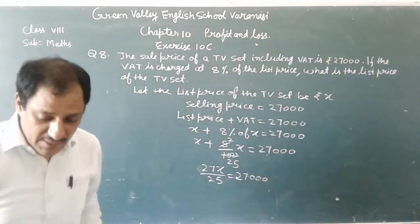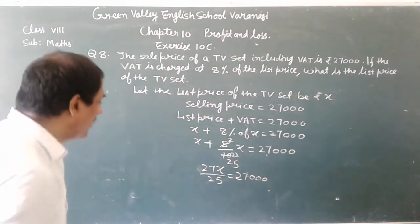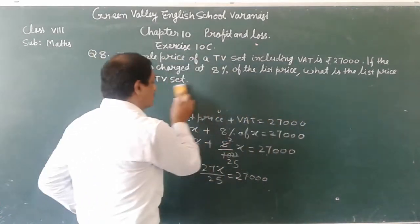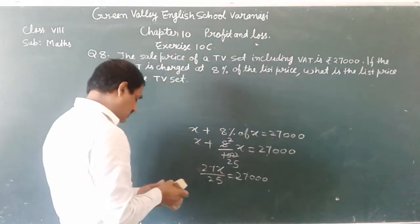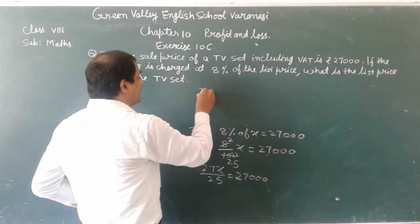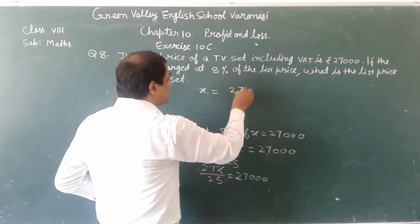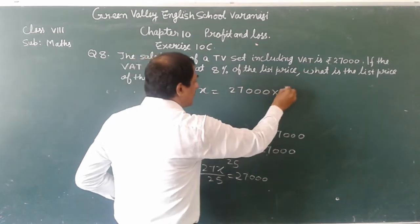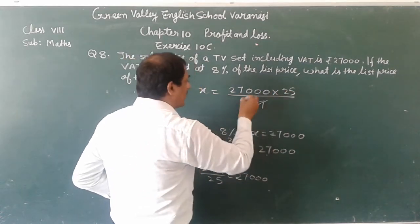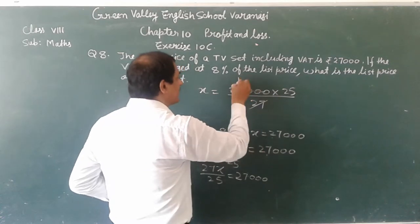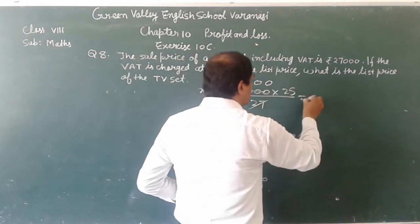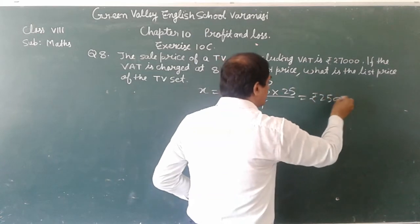Now can you find the value of X? X is equal to 27,000 multiplied by 25 upon 27. Now 25 times 27,000 divided by 27 gives 1,000 times 25, which is equal to Rs 25,000.